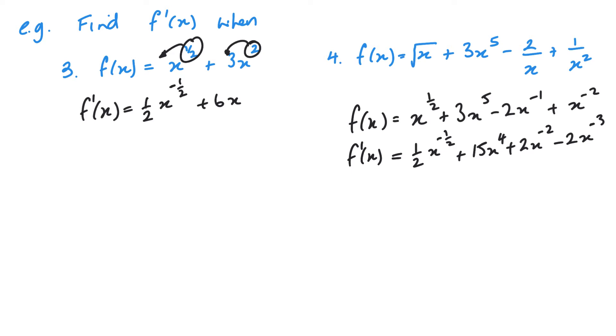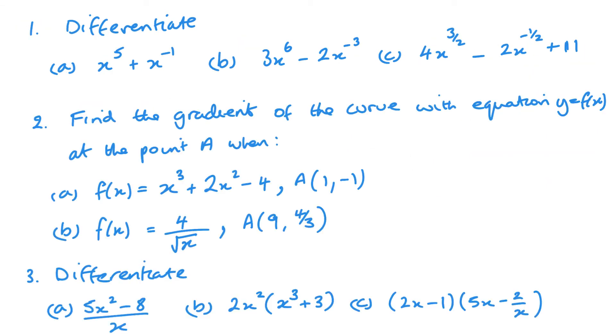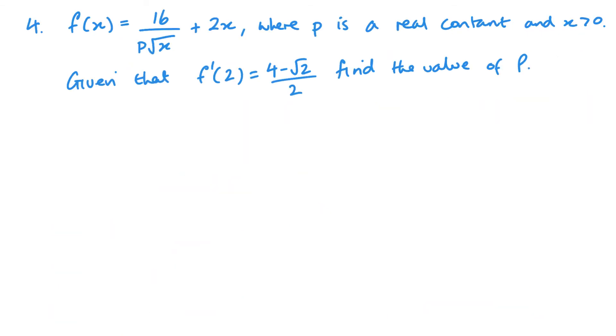Now just a quick check. And my powers, I've taken one away. 5's gone 4. Minus 1 to minus 2. Minus 2 to minus 3. In particular with the negative powers, as that is where you're more likely to make a mistake. Now if I left it like this, that would be worth full marks still. But I do prefer to have it in the same form as the question. 1 over 2 root of x plus 15x to the power 4 plus 2 over x squared minus 2 over x cubed.